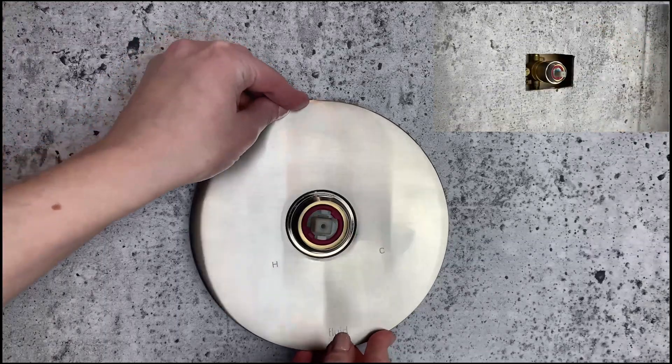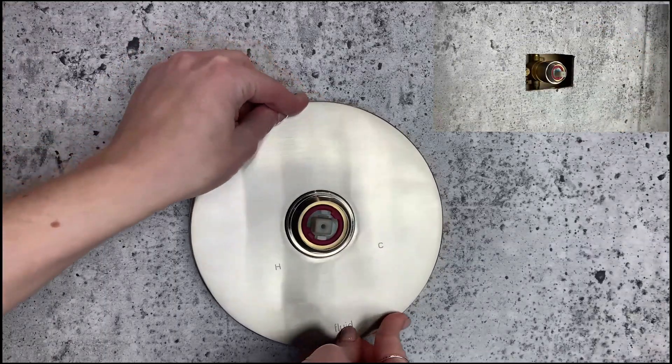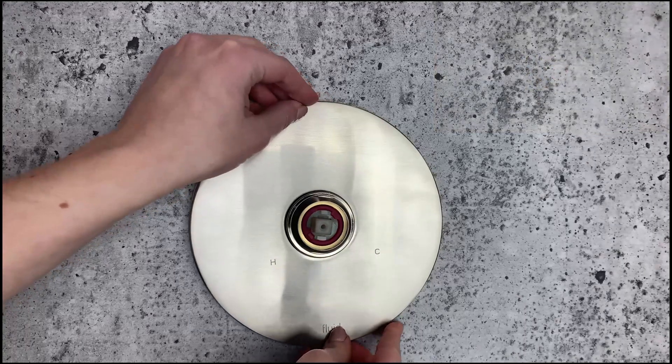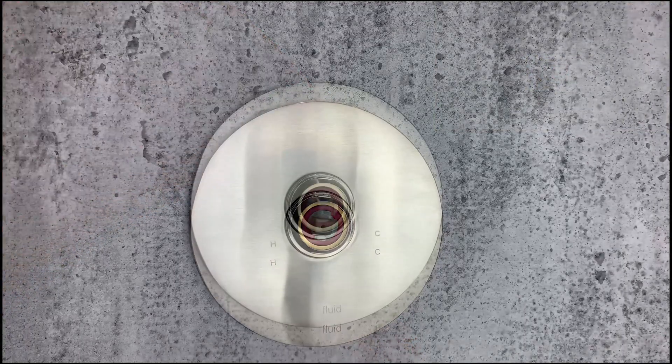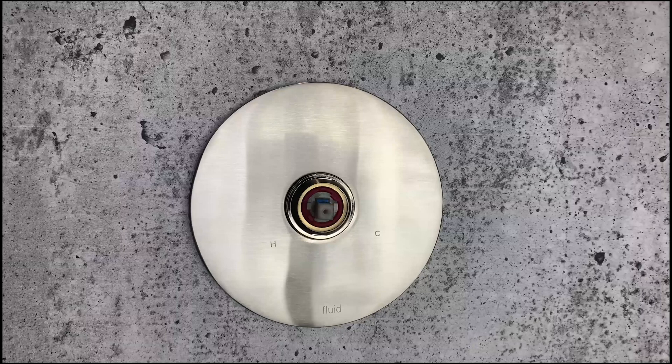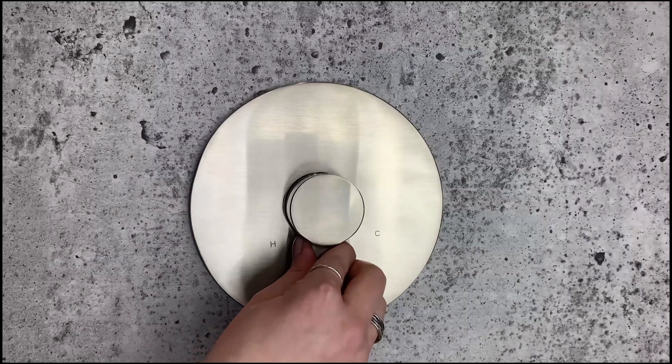If you already installed the plate once, that adhesive strip likely won't be strong enough to use again. So, you'll need to carefully clean it off and then run a bead of silicone along the inside of the trim plate, leaving a 1 to 2 inch gap along the bottom. Press it into place.